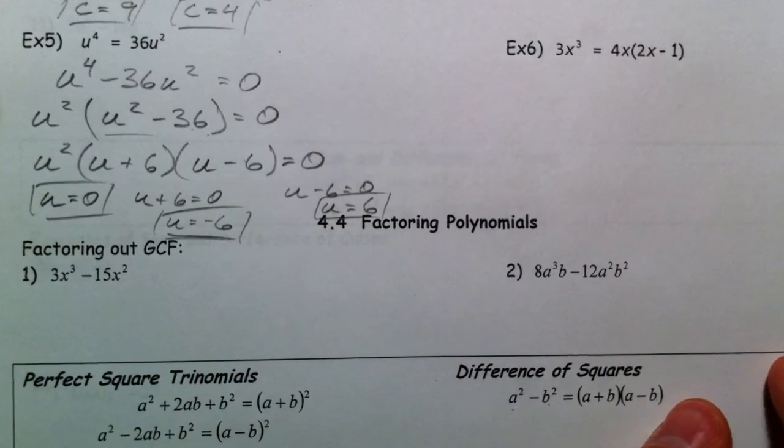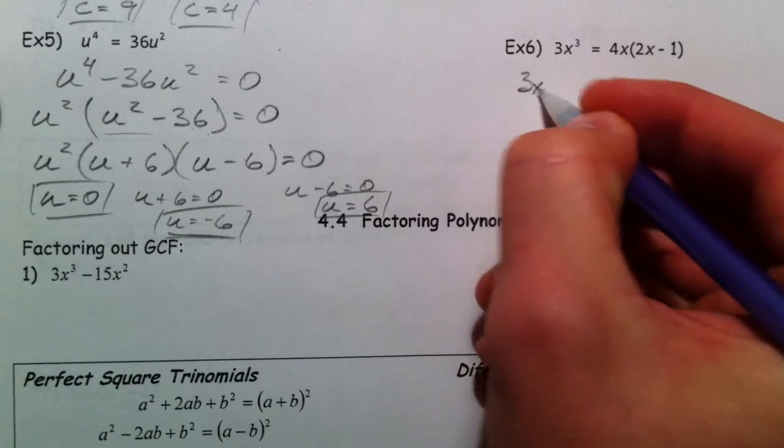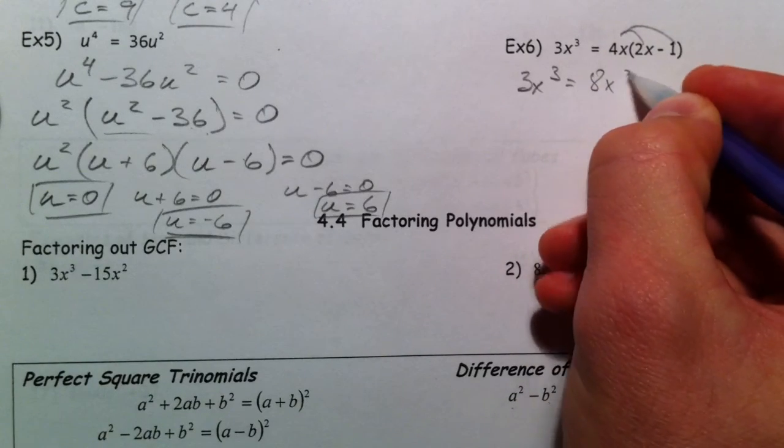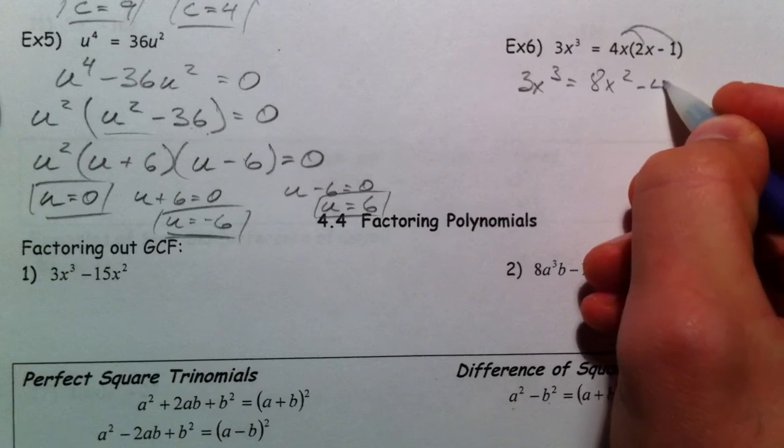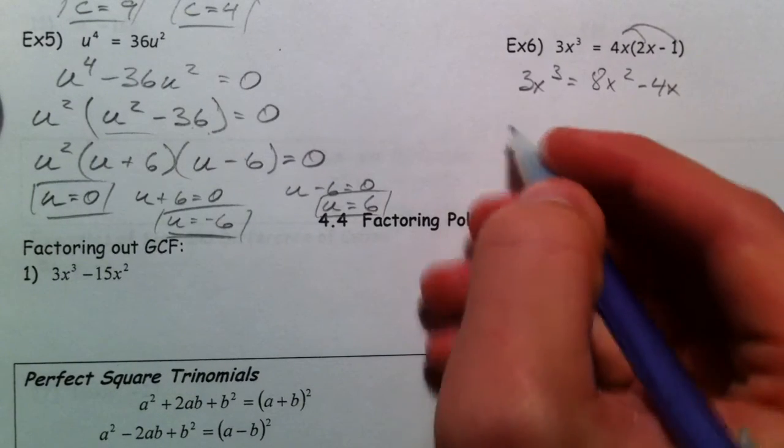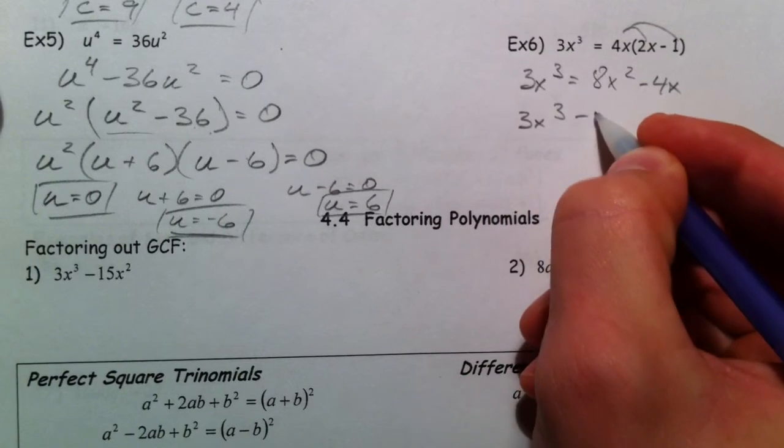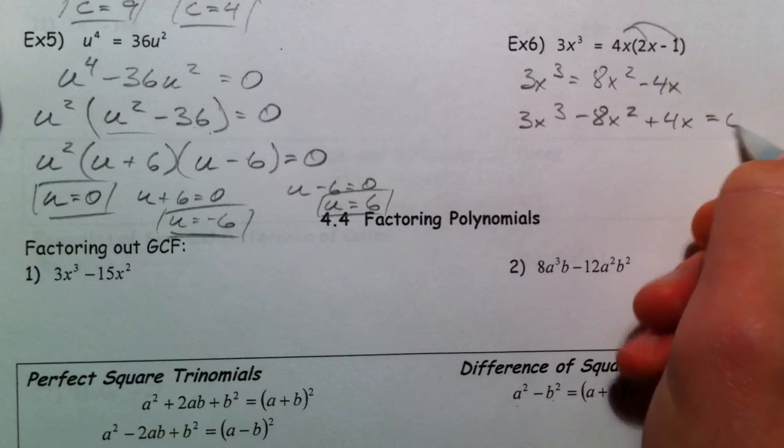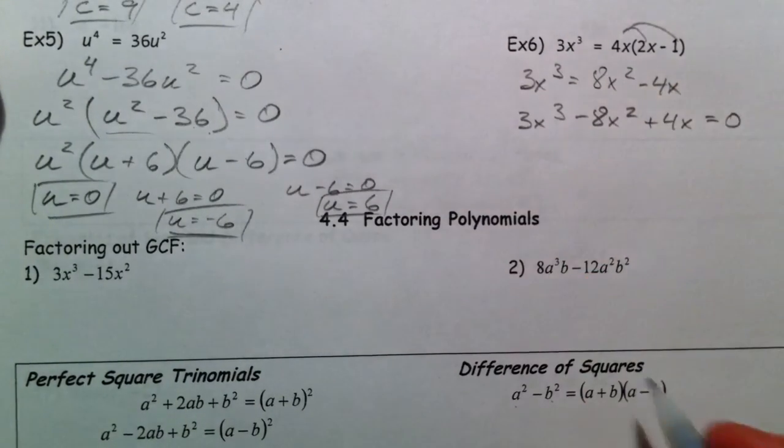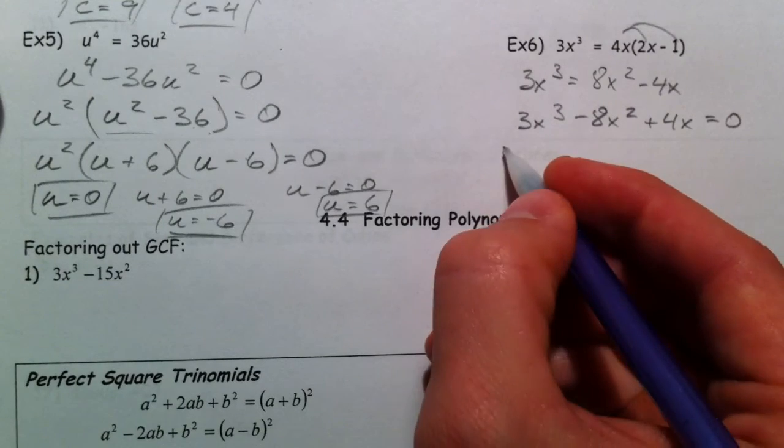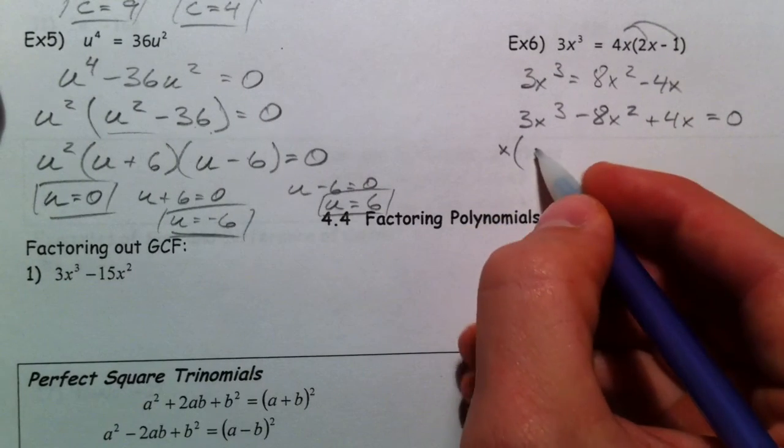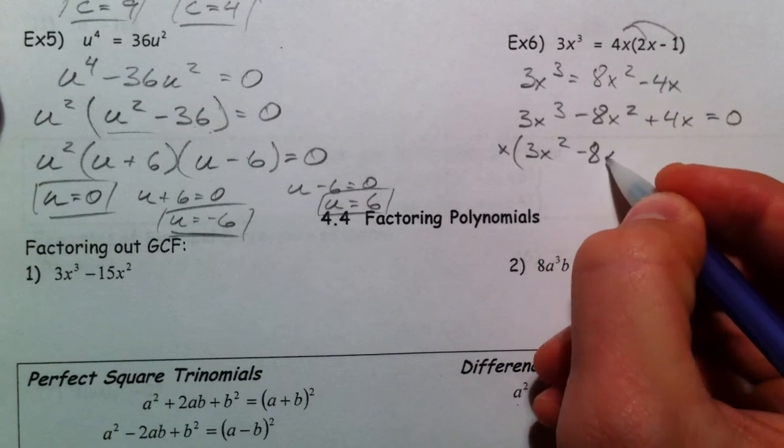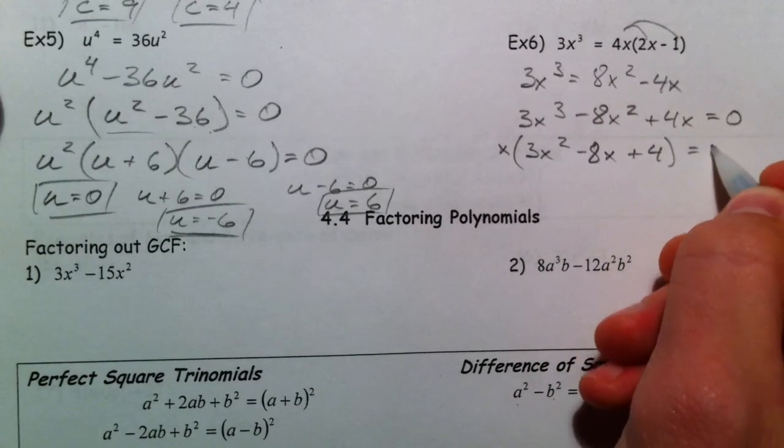Alright, next one. 3x cubed equals, let's distribute this, and we'll bring it all to the same side. 8x squared minus 4x. I'm going to bring everything to the 3x cubed side. So, plus 4x, and that's going to be equal to 0. I subtracted the 8x and add the 4x. All of these have an x in them. And so I can pull out an x. And we get 3x squared minus 8x plus 4 equals 0.